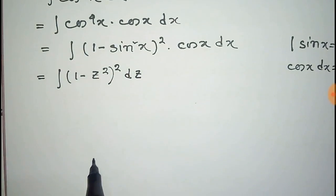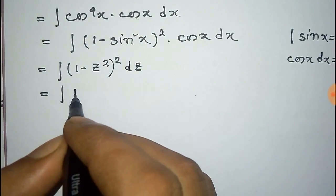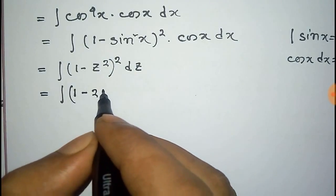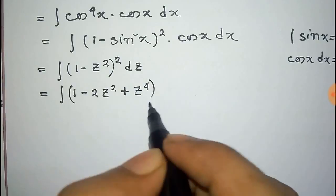Now we have to expand this so it will be 1 minus 2z square plus z to the power 4 into dz.